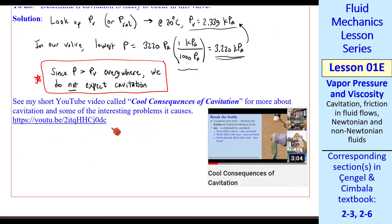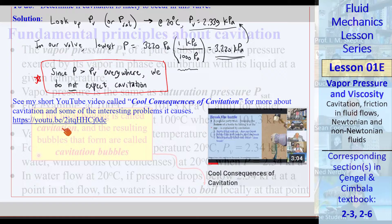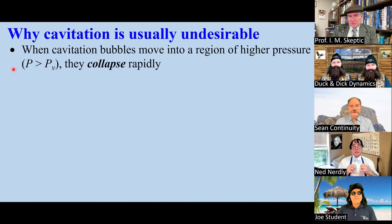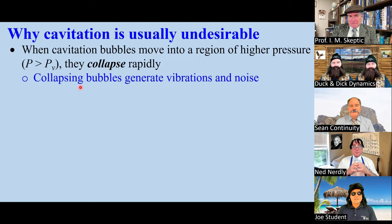I have a short YouTube video called Cool Consequences of Cavitation. I'll play some of it here. Here's an example of ship propeller cavitation. Cavitation is usually undesirable, because when these bubbles move into a region of higher pressure, they collapse rapidly. These collapsing bubbles generate vibrations and noise.